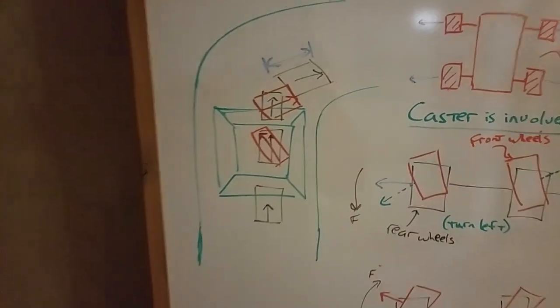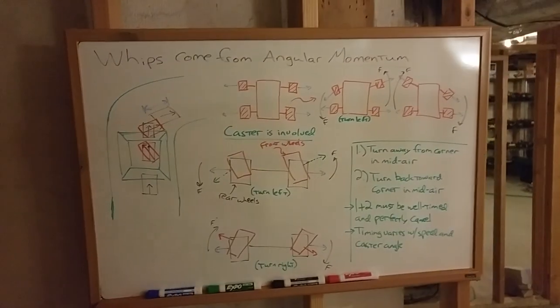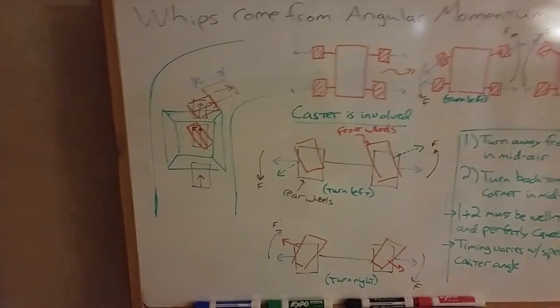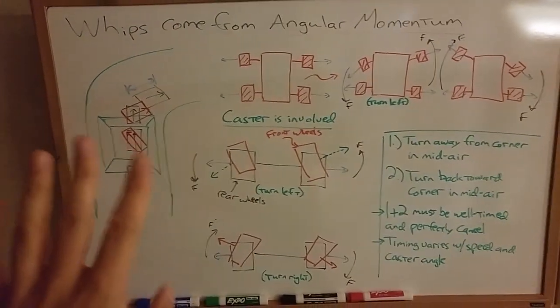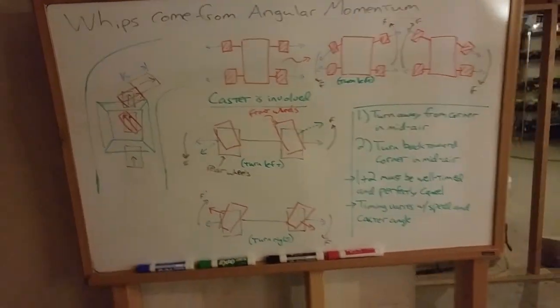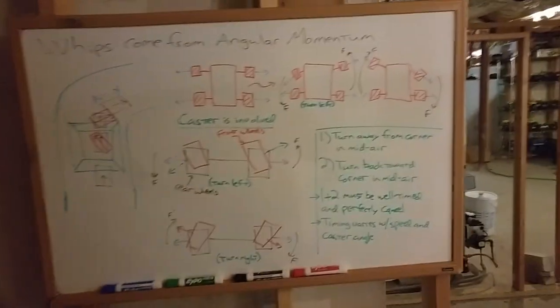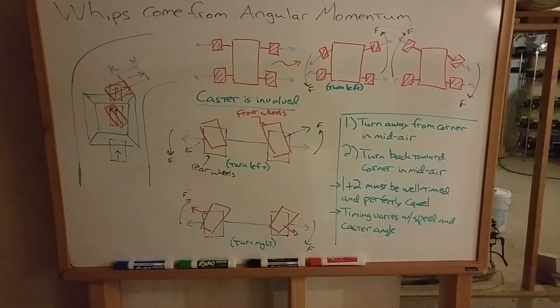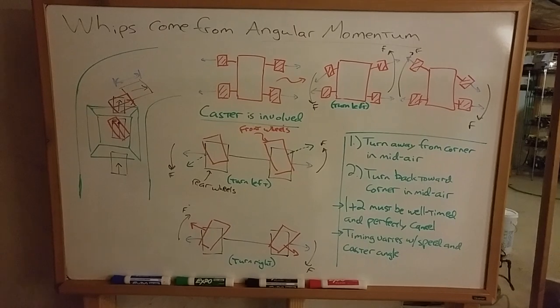Now, whipping, to be fair, requires a ton of practice. It's a highly risky maneuver, because if you don't do it perfectly, it can actually cost you time. Because if you land it wrong, the car can flip over, or maybe it slides out too much, and then you end up actually losing time. But if you can execute it perfectly, it can be a very fast way around a track.